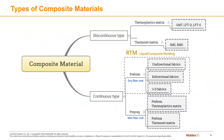The diagram here shows the categories of composite materials. Those materials used in RTM, also known as liquid composite molding, belong to the continuous type with dry fiber mat. When it comes to their fabric directions, they can be unidirectional, bidirectional, and three-dimensional fabrics.